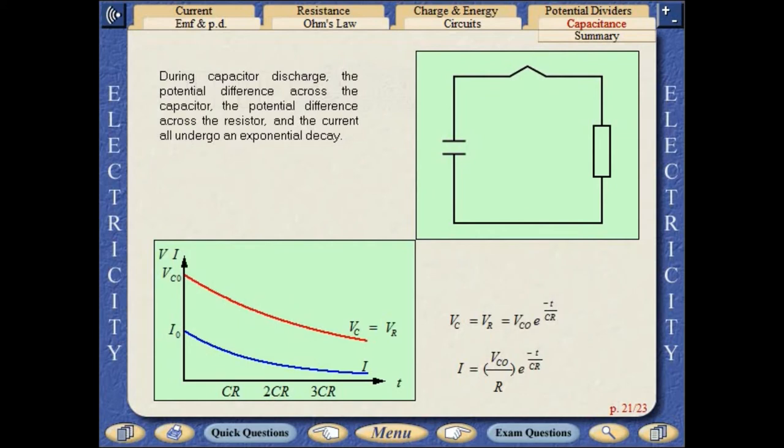During capacitor discharge, the potential difference across the capacitor, the potential difference across the resistor, and the current all undergo an exponential decay.